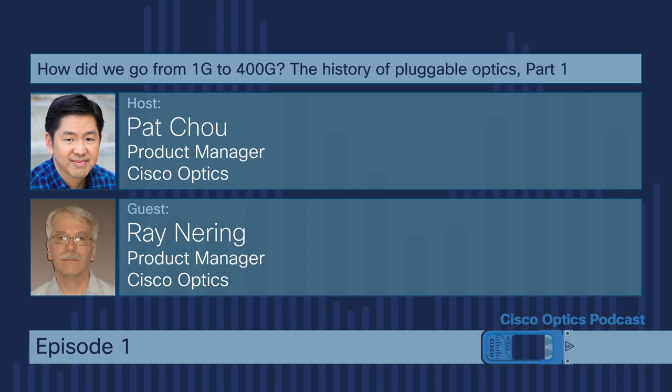So I thought people out there, hopefully listening to this now, would benefit from hearing some of these stories. Since QSFP-DD is kind of the big thing right now, I would ask you in general: how did we get here? How did we get to QSFP-DD? Where did it start? What kind of decisions were made in the industry that eventually brought us to this point?